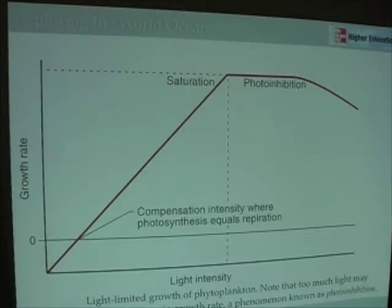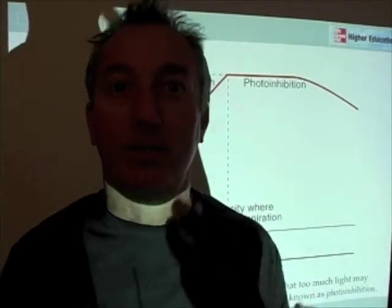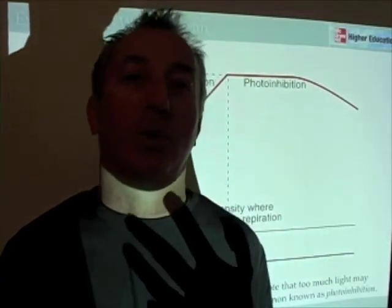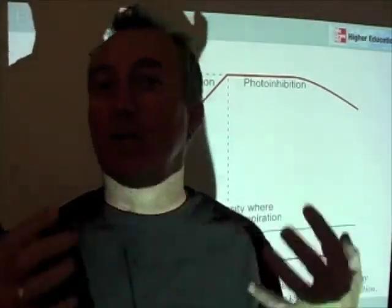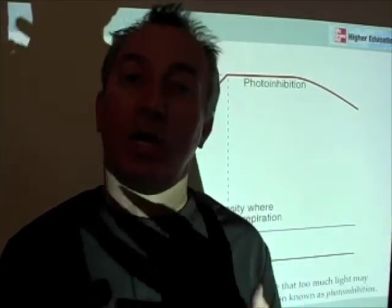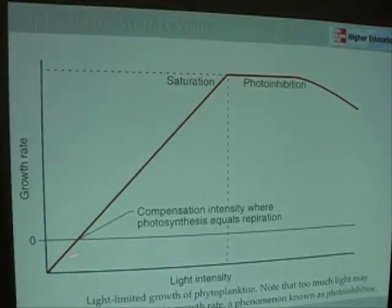One other thing to notice in this figure is that there's a certain amount of light required before you really start to get positive growth — that's called the compensation light intensity. Plants also have to use some of the energy they produce to maintain their cellular processes, cell structure, roots, stems, and leaves. There's a certain respiratory cost associated with that, so a certain amount of light is needed just to keep plants alive. If you keep plants in the dark forever, they are certainly going to perish.